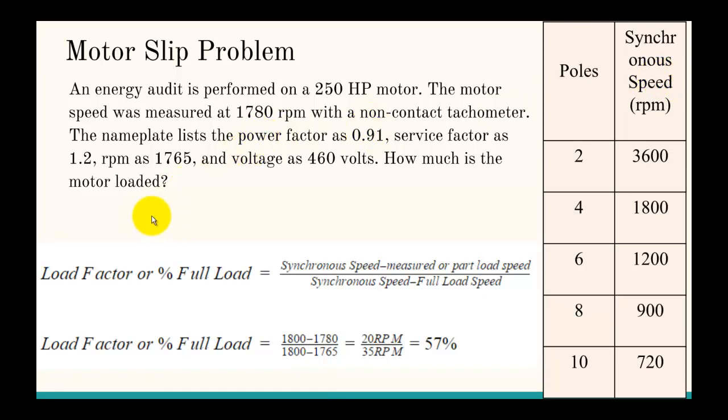Now let's talk about how you figure out load factor from that. You basically use something called the slip method. It's how much it slips at part load versus full load. We take the synchronous speed, which is the 1800, subtract what the measured or part load speed is, which we measured at 1780. That's the numerator. The bottom is the synchronous speed minus the full load speed, which is normally listed on the nameplate, which is 1765. Then we take the ratio of those two and we find that it's 57% loaded. So if it asks what horsepower the motor was outputting, you would take this 57% and multiply by the 250 HP. So those are the motor and pump and fan problems. Thanks for watching.